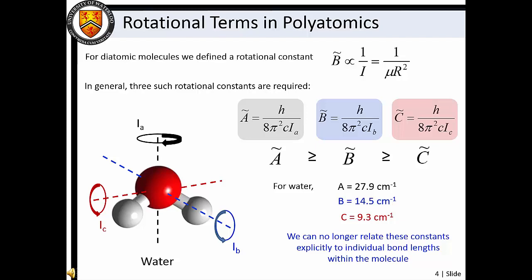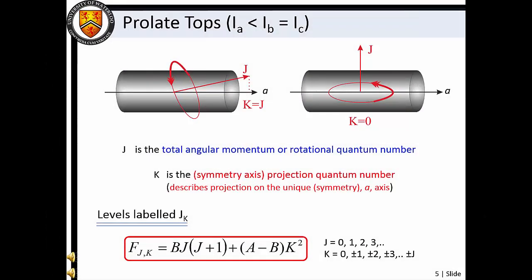Still, through measurement of rotational spectra, molecular moments of inertia can be deduced, which in turn may be used to precisely determine molecular geometry. For symmetric top molecules, two of the moments of inertia are equal, which means only two rotational constants are required to describe rotational energy level structure. For prolate top molecules, where I_B equals I_C, we use the A and B rotational constants.